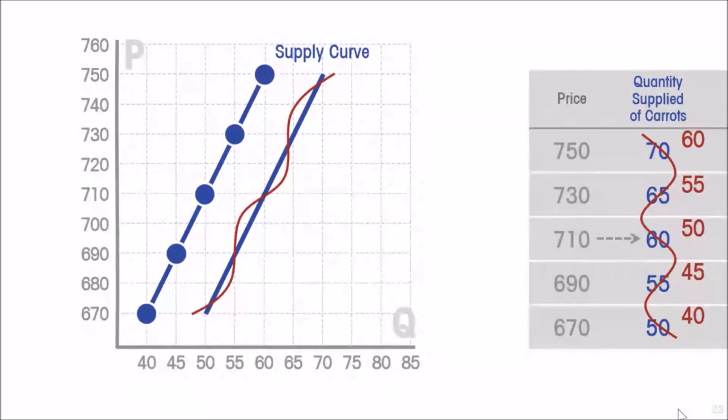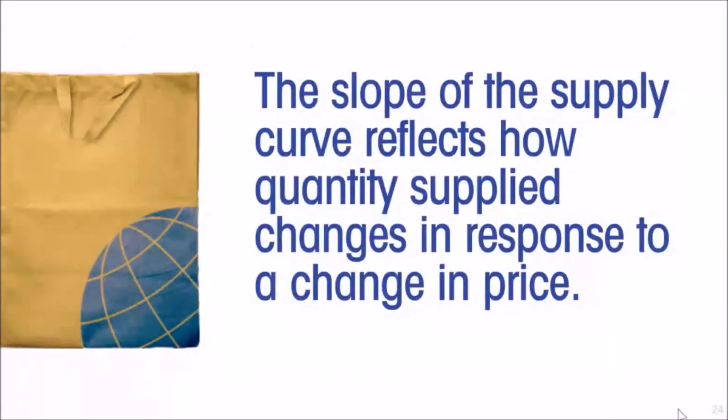So at a price of seven hundred and ten dollars a pound, instead of sixty pounds of carrots being supplied, now only fifty pounds will be supplied. Our shorthand is to say the supply curve of carrots shifts to the left. So we conclude that the slope of the supply curve reflects how quantity supplied changes in response to a change in price.